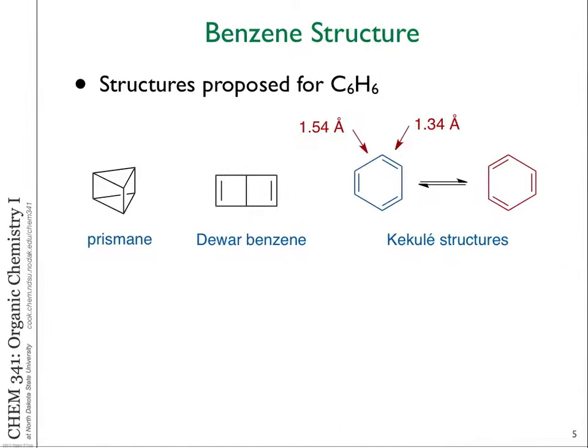Some of the early structures people considered: C6H6 — how many ways could we put that together? One idea was the highly compact prismane structure, which has no pi bonds and all carbons and hydrogens symmetric. That's not unreasonable based on the evidence at the time. Another proposal was Dewar benzene, but that doesn't fit because it has double bonds that could be reactive and the carbons and hydrogens are not all equivalent — some are on a double-bonded carbon and some on sp3.